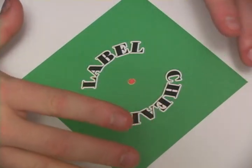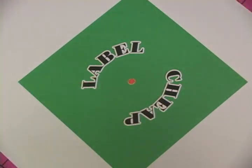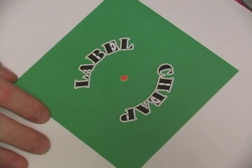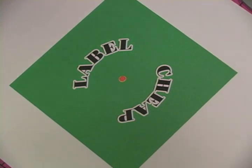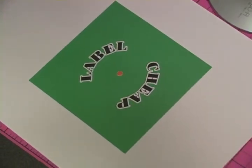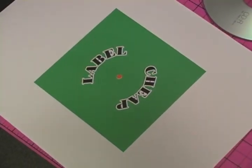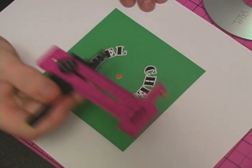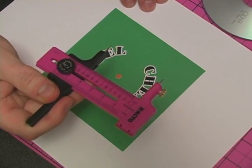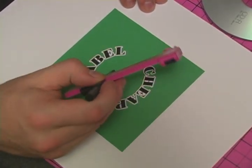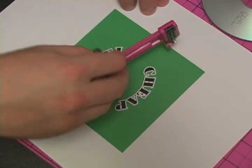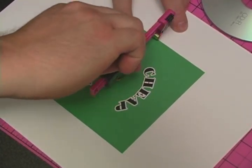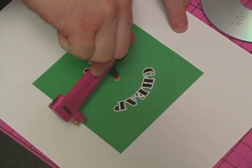So what we're going to go ahead and do is cut this out. It's a very simple process. First you take your larger compass cutter and you want to line it up in the center of that dot, and then what you want to do is go ahead and cut the outside.